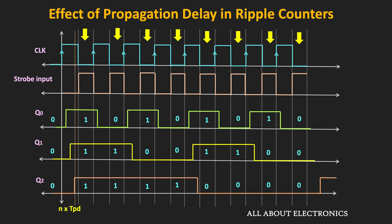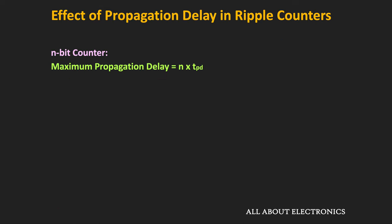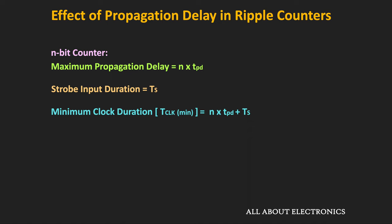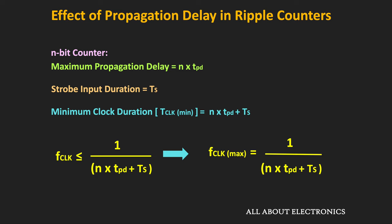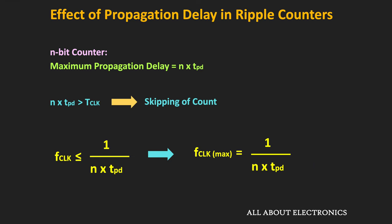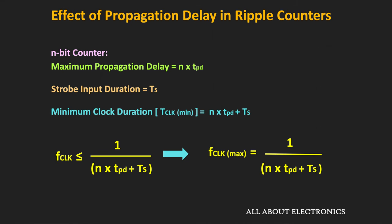While selecting the maximum clock frequency of the ripple counter, we should also consider the on-time of the strobe signal. If the propagation delay of the counter is n times TPD and the timing of the strobe signal is Ts, then the minimum clock duration should be equal to n times TPD plus Ts. So the maximum allowable clock frequency is equal to 1 divided by (n times TPD plus Ts). If the strobe timing is not mentioned, use f_clock = 1 / (n × TPD). If the strobe timing is mentioned, use the second equation with Ts included.